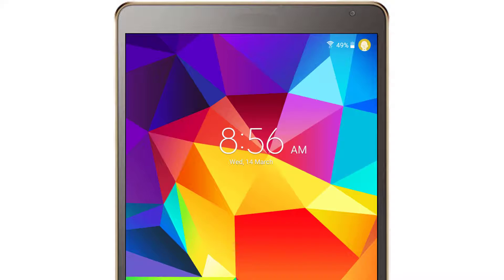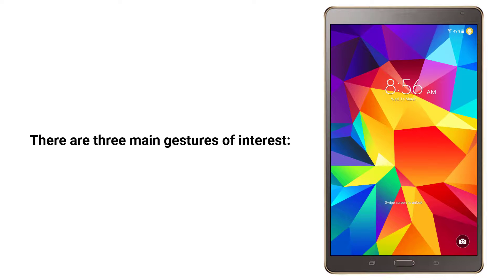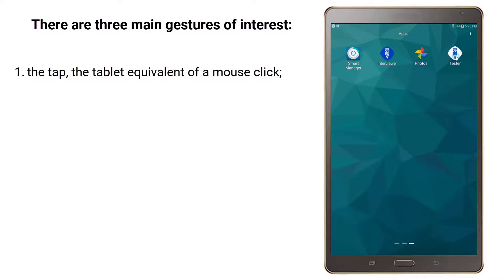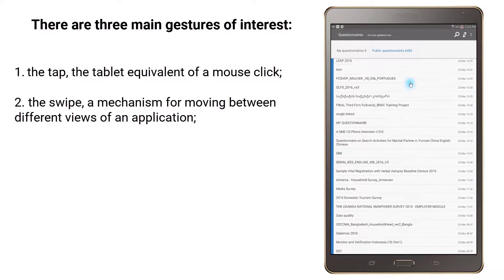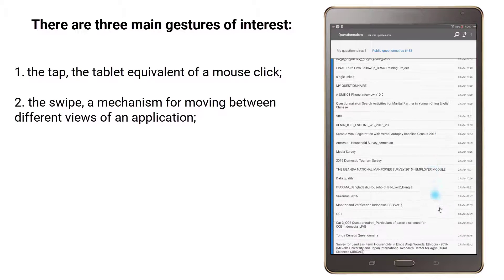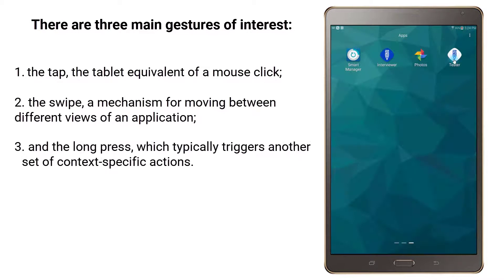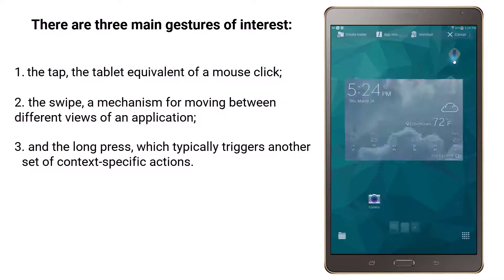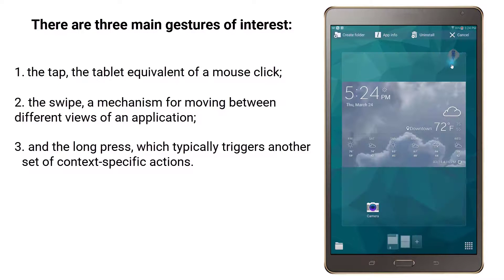There are several ways to input data or take actions in Android, all of which are also relevant for survey solutions. There are three main gestures of interest: the tap, the tablet equivalent of a mouse click; the swipe, a mechanism for moving between different views of an application; and the long press, which typically triggers another set of context-specific actions.